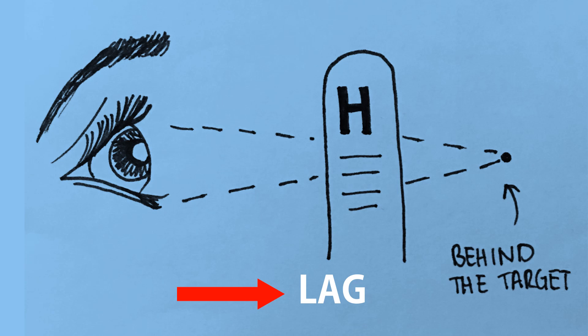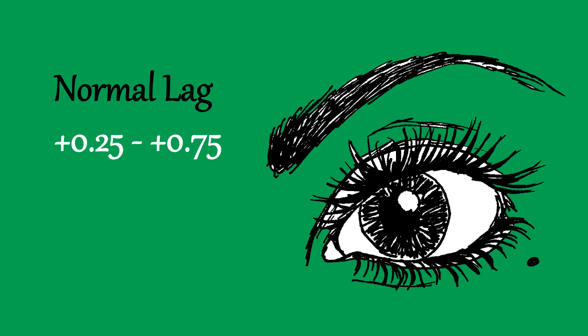When we focus behind the target, we call this a lag in accommodation. The normal lag in accommodation is +0.25 to +0.75. You can think about this as how lazy we can be when we're focusing at a target.